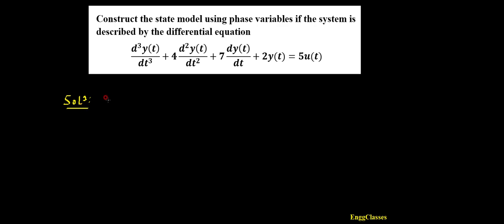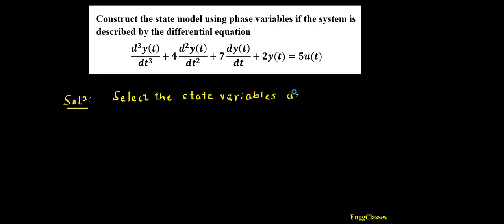First, I need to select the state variables. So which are those state variables? They can be selected as: the first state variable is capital X1. What is that equal to? In this case it is the output y(t), so X1 is equal to y(t) is the first state variable.